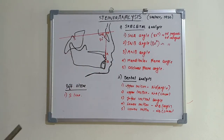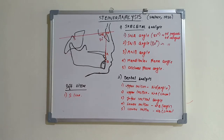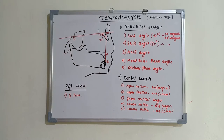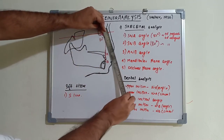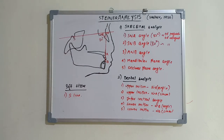The SNB angle is formed by joining points S, N, and B, and indicates the anterior-posterior positioning of the mandible in relation to the cranial base - similar to how SNA indicates the positioning of the maxilla. The mean SNB angle is 80 degrees. If the mandible is prognathic, the SNB angle increases; if the mandible is retrognathic or retrusive, the SNB angle decreases.